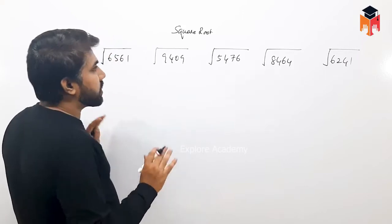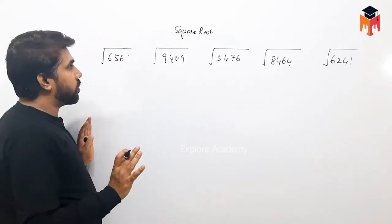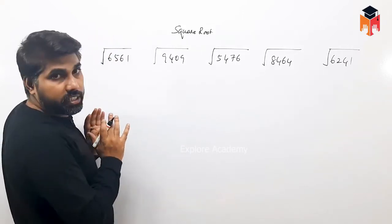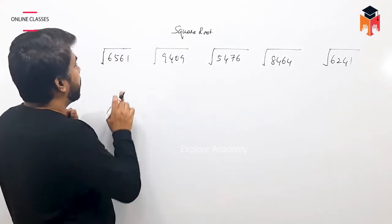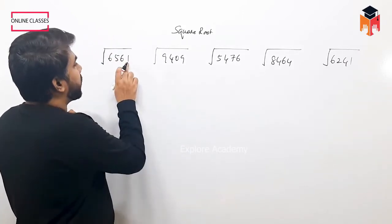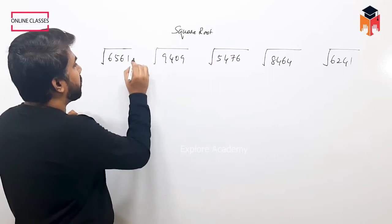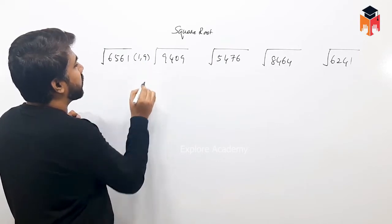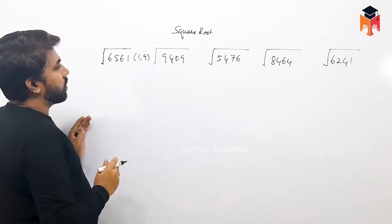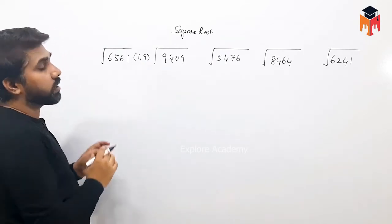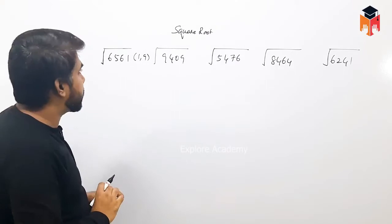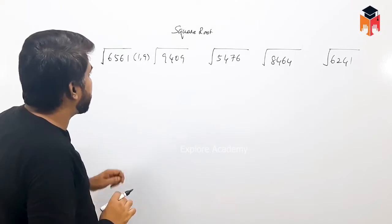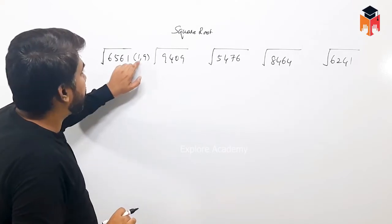Step 1: look at the last digit. The last digit is 1. The possibility for the answer's last digit is 1 or 9. Either 1 or 9 — one of these is the result.